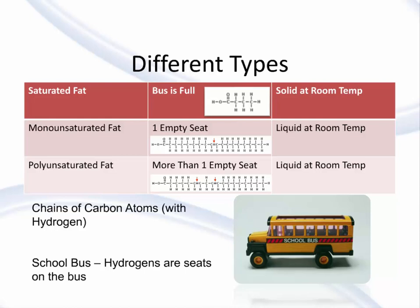Monounsaturated — mono meaning one — would mean there's one empty seat on that bus. Finally, polyunsaturated would mean more than one empty seat. You can see the structure on the screen of what each of those looks like.